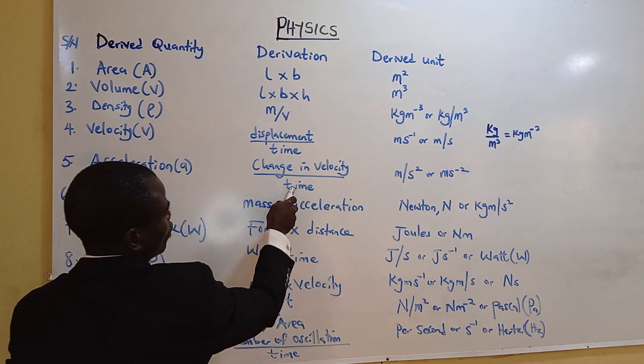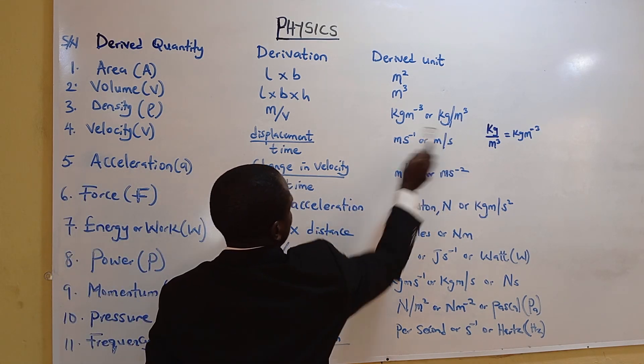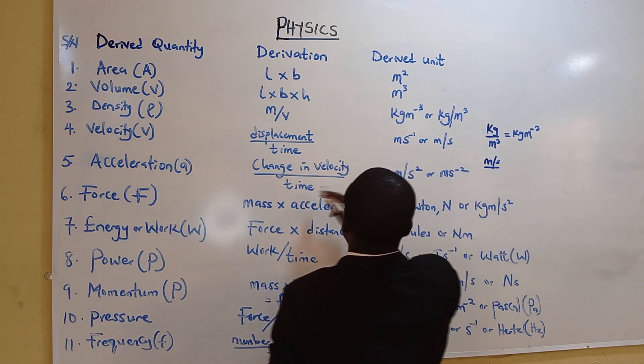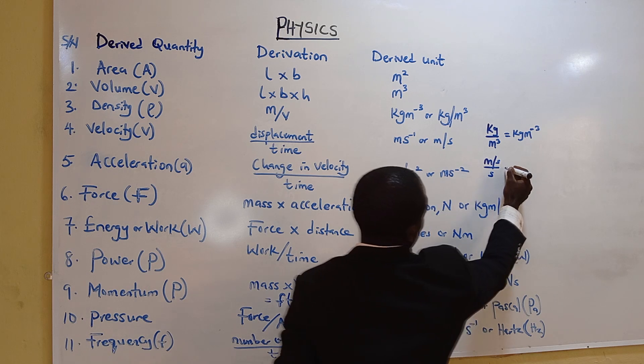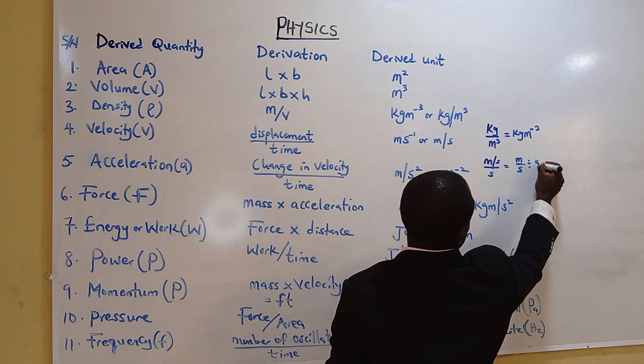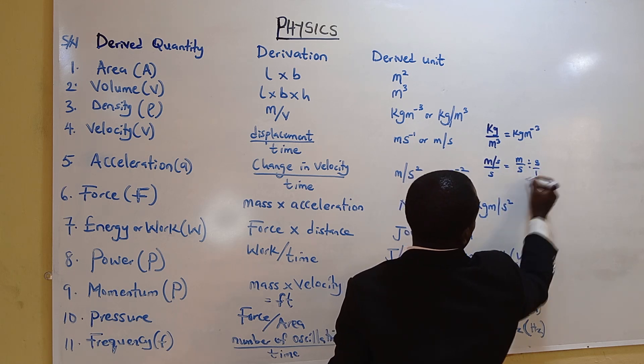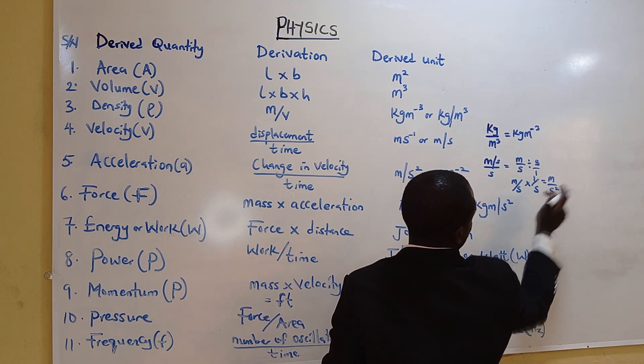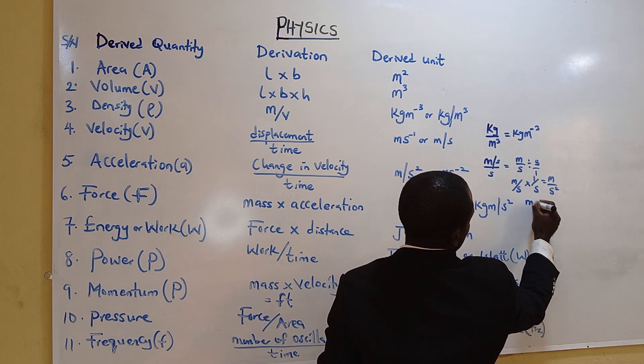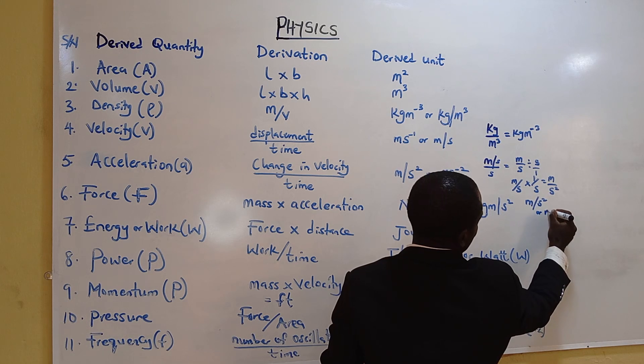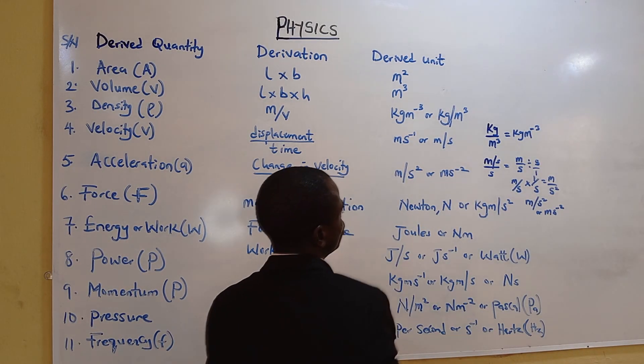Acceleration is change in velocity over time. You have meter per second over seconds. It becomes meter over S divided by S. For this one, S is over 1. It becomes meter per second times 1 over S, which is meter per second squared. When you move this slash, it becomes meter per second squared.